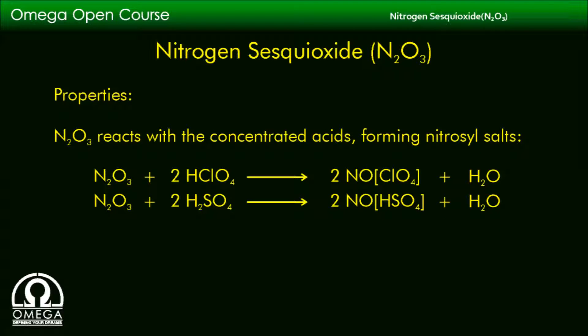N2O3 reacts with concentrated acids forming nitrosyl salts. The reactions are: N2O3 + 2HClO4 → 2NO·ClO4 + H2O, and N2O3 + 2H2SO4 → 2NO·HSO4 + H2O.